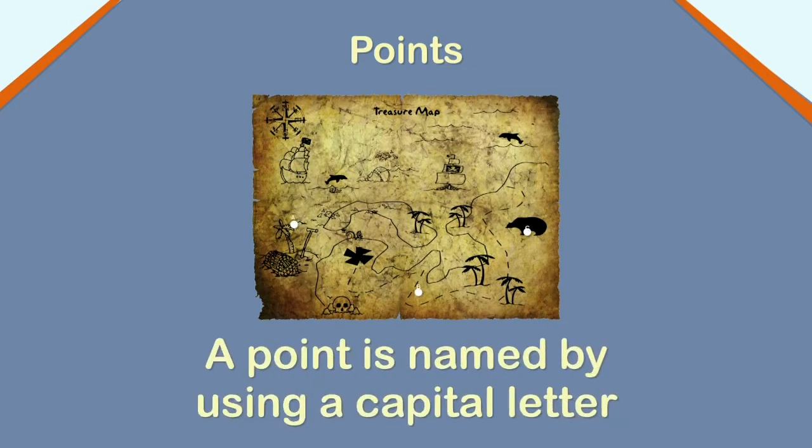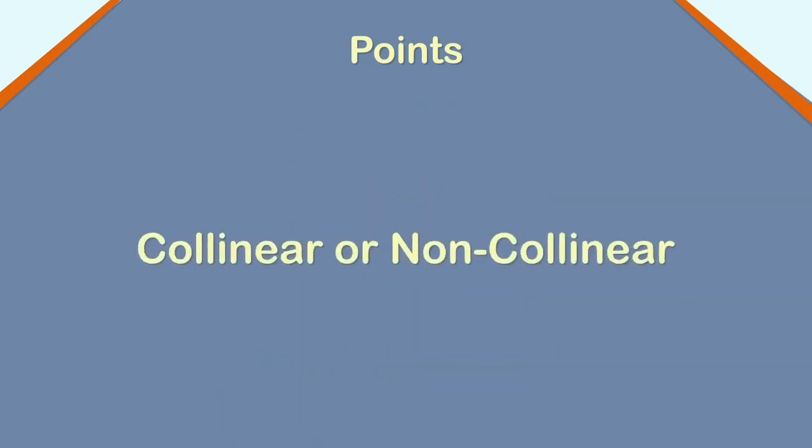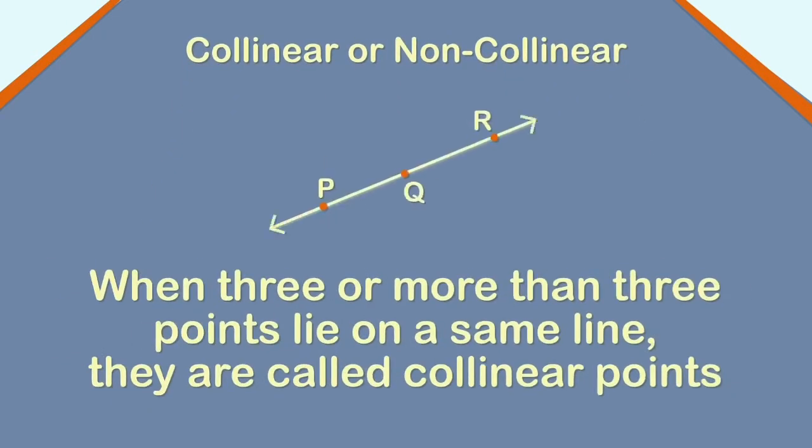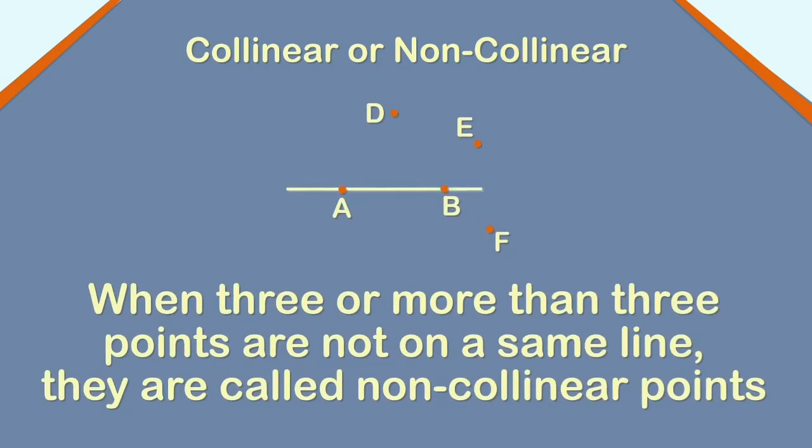A point is named by using a capital letter. Here, the three points are named A, B, and C. A group of points can be collinear or non-collinear. When three or more points lie on the same line, they are called collinear points. Here, points P, Q, and R are collinear points. But when three or more points are not on the same line, they are called non-collinear points. Here, the five points D, E, A, B, and F do not lie on the same line. Hence, the points are non-collinear.